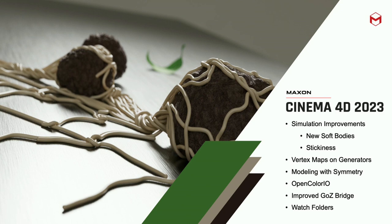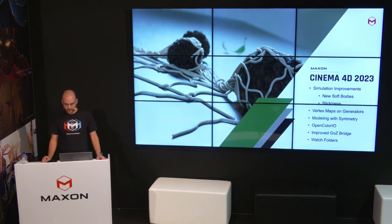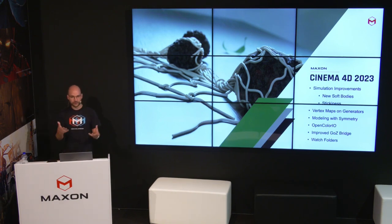We've got a few cool updates that I'm going to show live. We did some improvements to the unified simulation system. We added soft body simulation, stickiness, target length. We now have vertex maps that work on generators — field-based vertex maps can now work on primitives and almost every generator. We added a new mode for modeling with symmetry, OpenColor.io for professional color workflows, an improved GoZ bridge, and watch folders to the asset browser. That's what I want to start with.